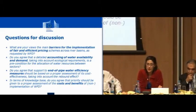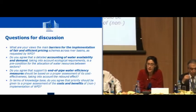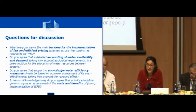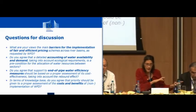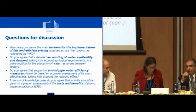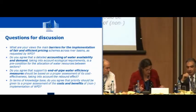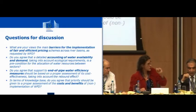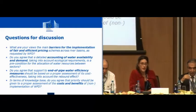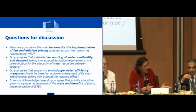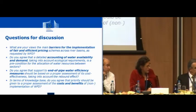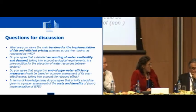When we start with the second question: do you agree that a detailed accounting of water availability and demand, taking into account ecological requirements, is a precondition for allocation of water resources between sectors? Probably each of you could answer yes or no, but I would like it as an open question. What are key requirements to ensure fair and sustainable allocation, meaning accounting for ecosystem requirements? What do we need in terms of knowledge base? I would like to start with Conchita, please.